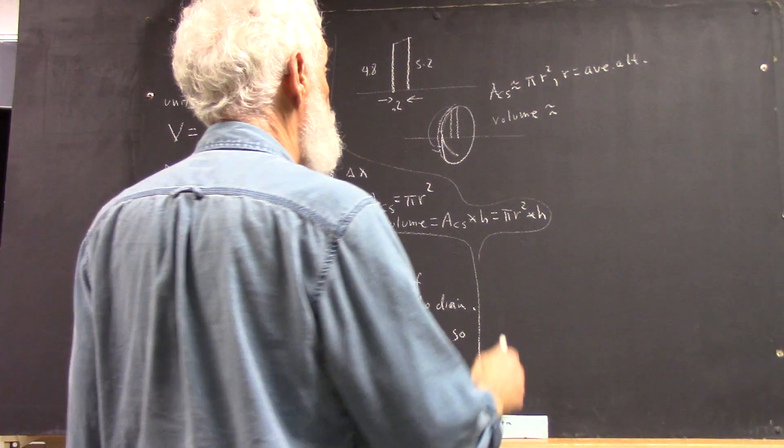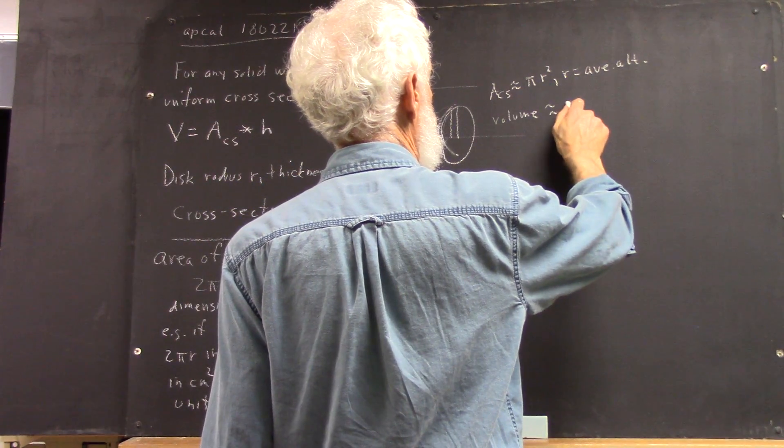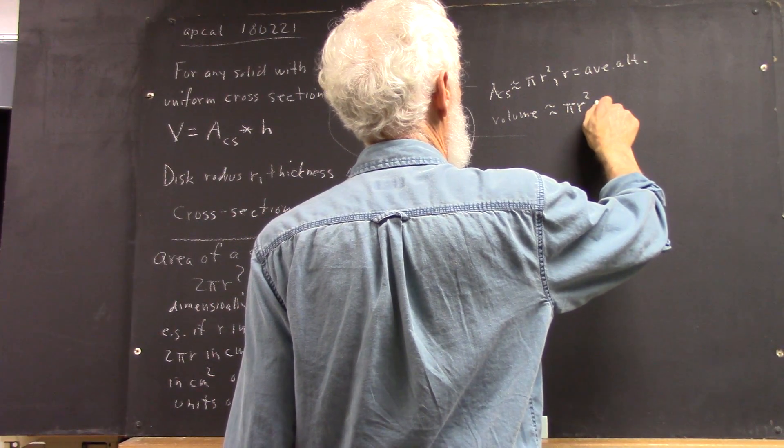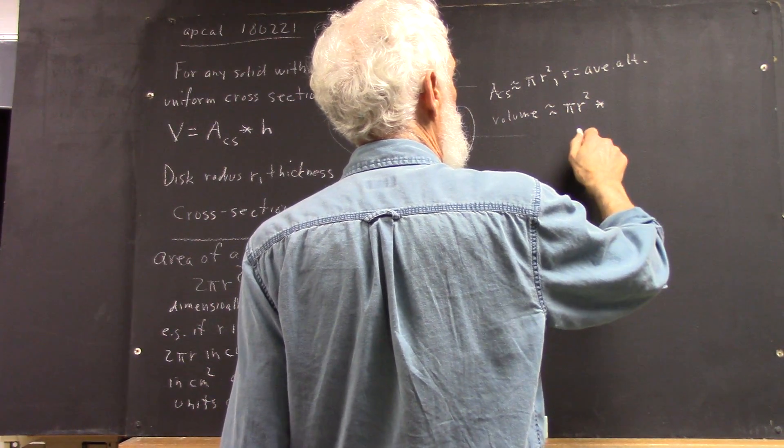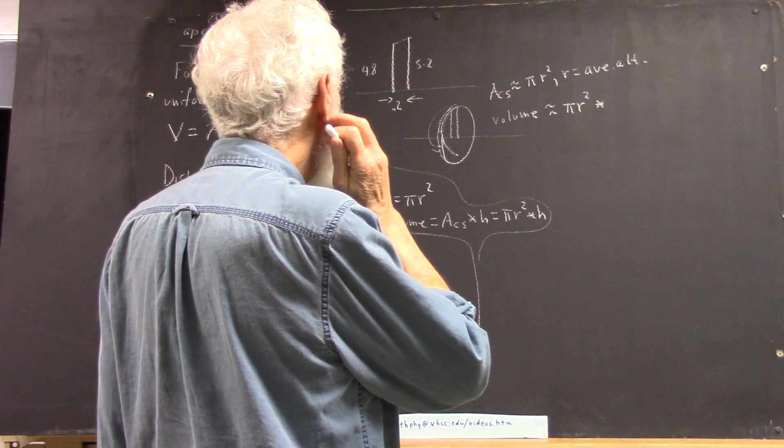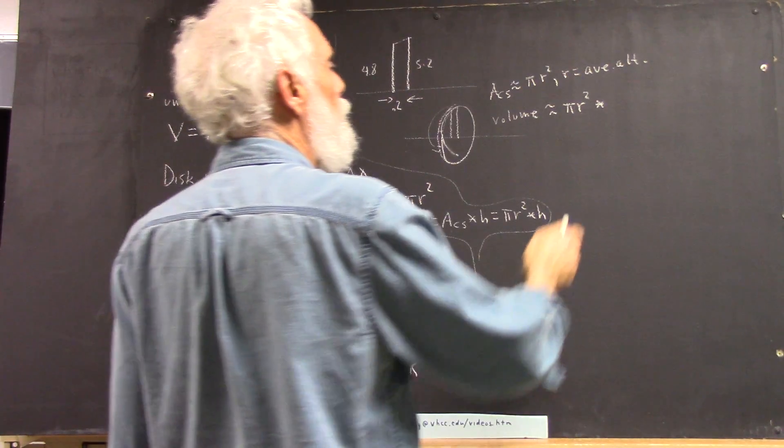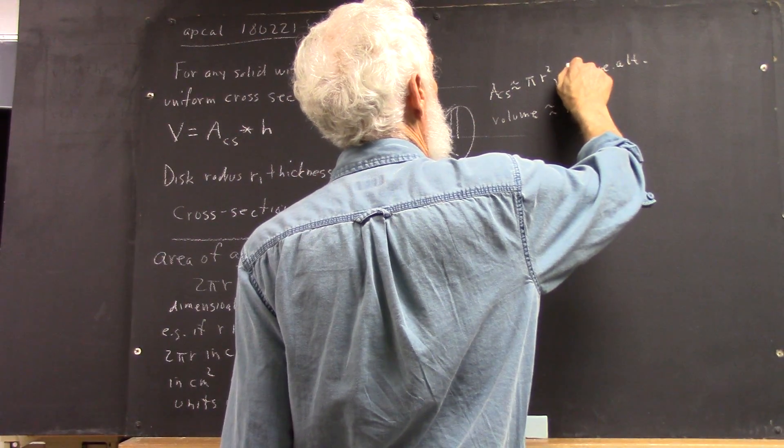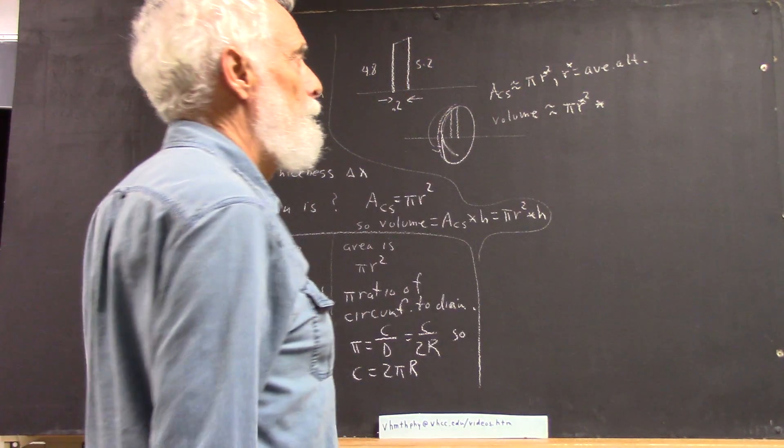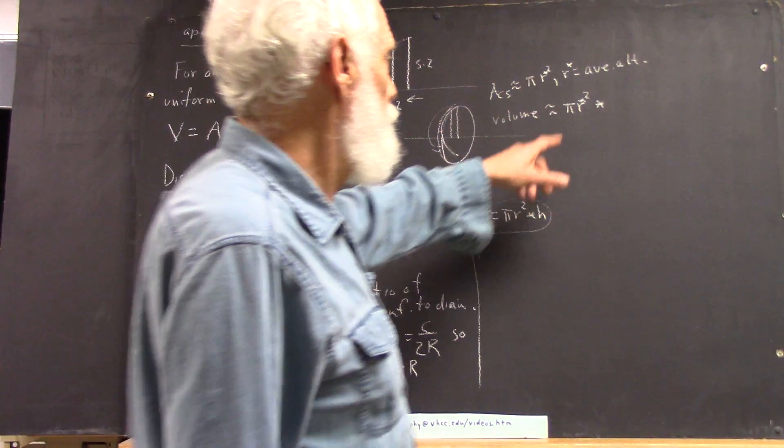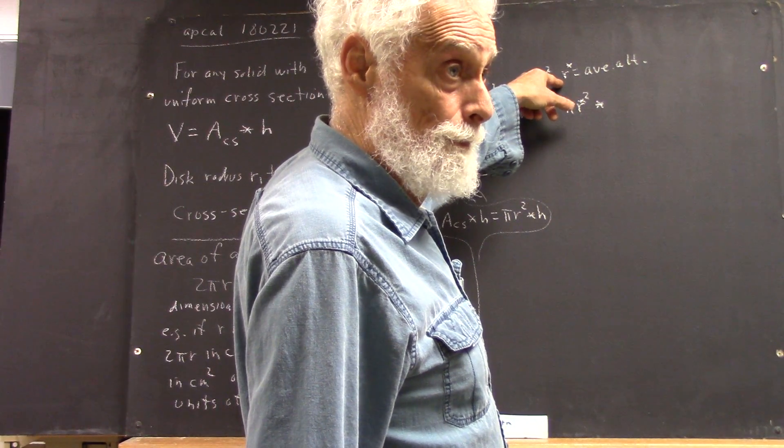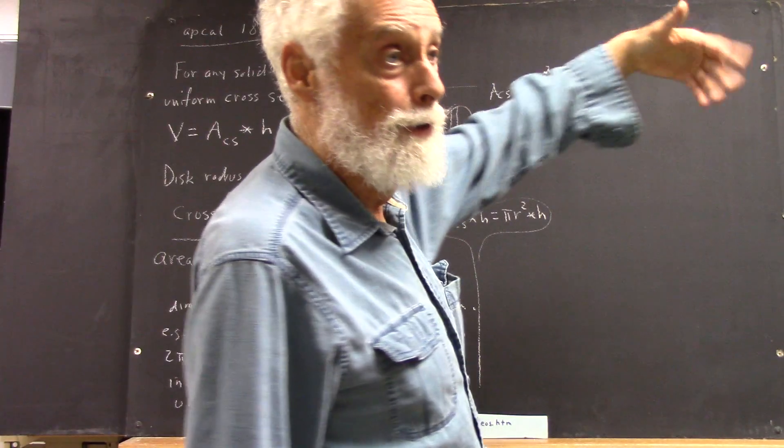Then the volume is going to be pi r squared, where r is the average altitude. So, actually, I'm going to call this r star. It's like r star squared, just to indicate, just to make this a specific number, rather than the general radius.